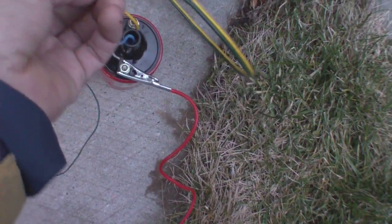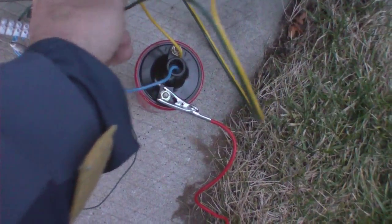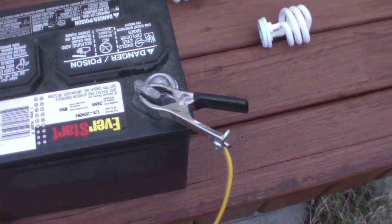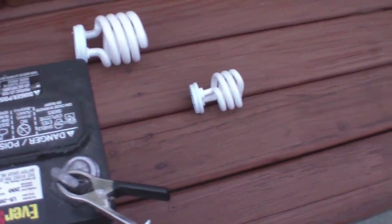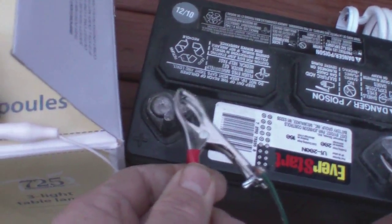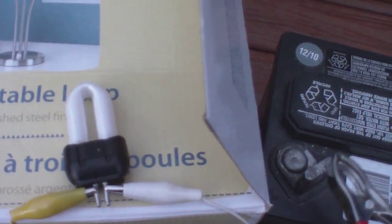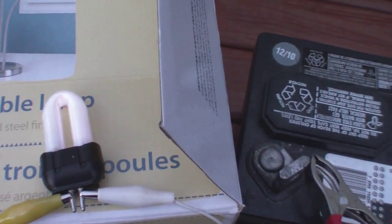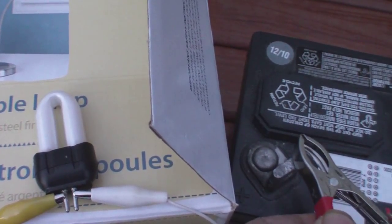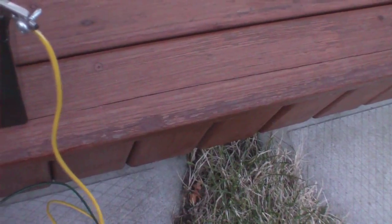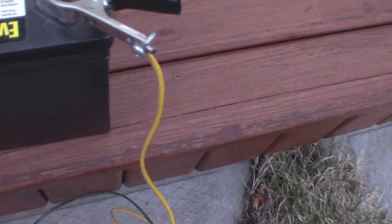Now when I hook it up, what happens is I can get it to run, but not when I'm charging. So when I connect this, you can see I get the neon firing—or sorry, the fluorescent firing. But when I connect the charging end of the circuit...